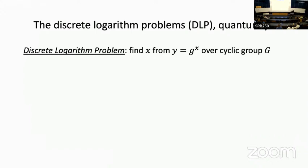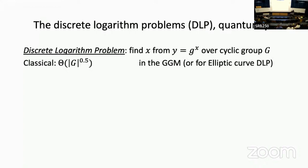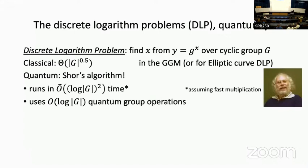This is a problem everybody probably knows. We are given a cyclic group and generator, and the problem is g to the x, and we try to find x. In the classical setting, there is the so-called generic group model, which is a black box group. In this model, we already know that the discrete logarithm requires square root complexity. But in the quantum case, Shor's algorithm comes in and everything is broken. The running time is polylogarithmic, and if we only count the number of group operations, it's just O(log G). We will see this later more explicitly.